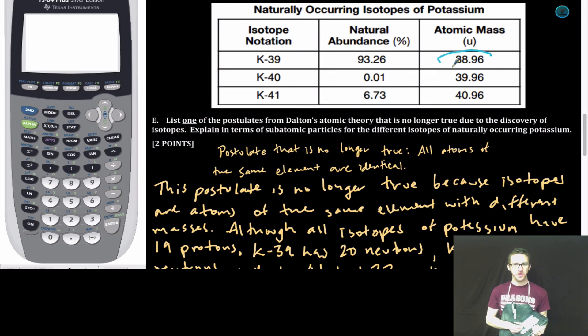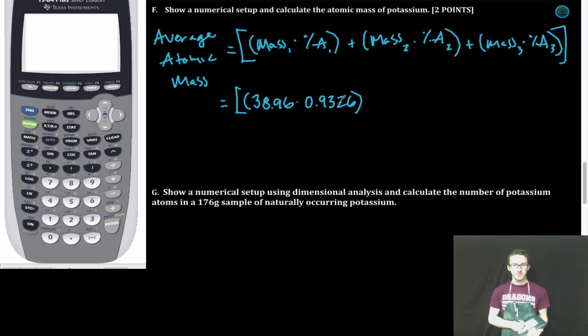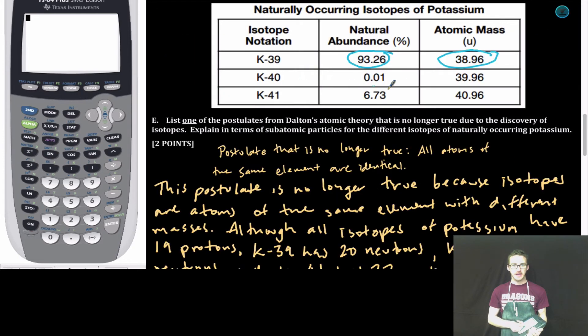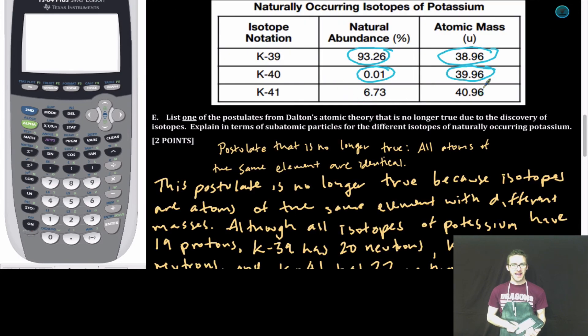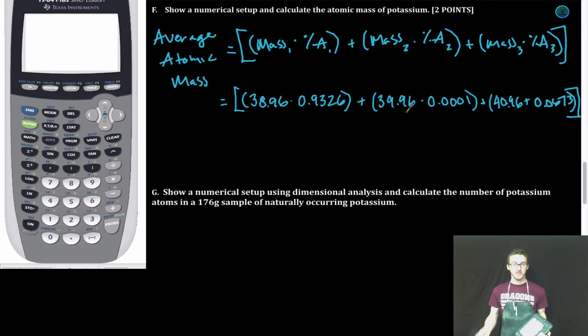First isotope mass, 38.9, percent abundance, 93.26 percent. Don't forget to move your decimal two places. Second isotope mass, 39.96, percent abundance, 0.01 percent. Third isotope mass, 40.96, natural abundance, 6.73 percent. Don't forget, as you set up and work with your percentages to move your decimal two place values each time.